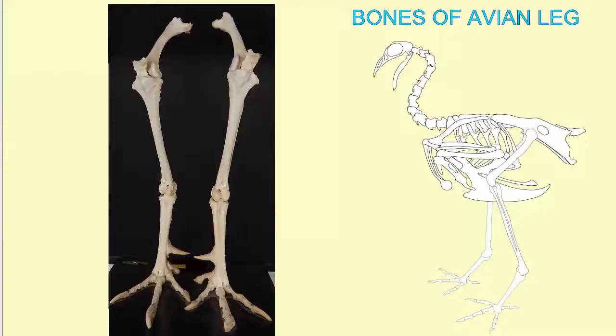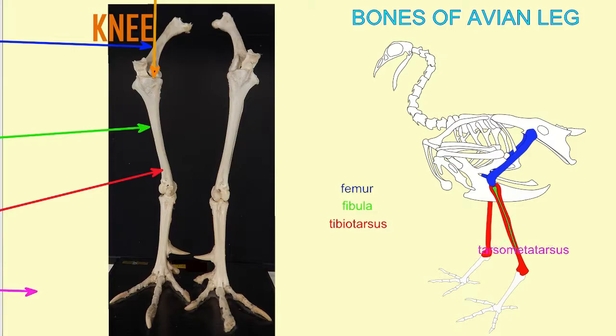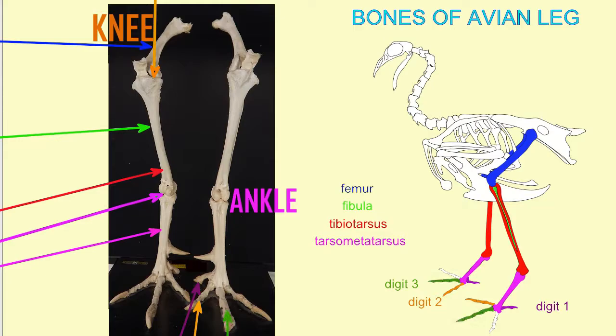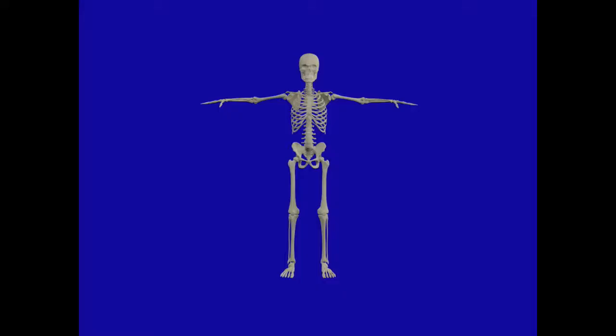When one studies leg bones of birds, in the lower leg, one encounters terms such as tibiotarsus or tarsometatarsus. What are these bones?